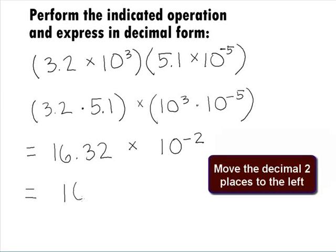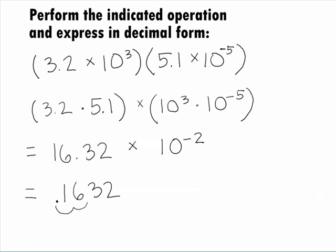Since we are multiplying times 10 to the power of negative 2, it looks like we need to move our decimal place 2 units to the left. This will give us our final answer of .1632.